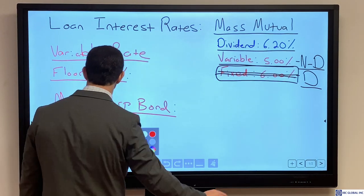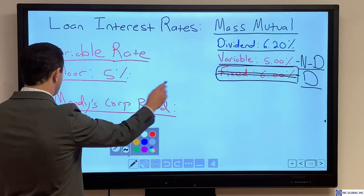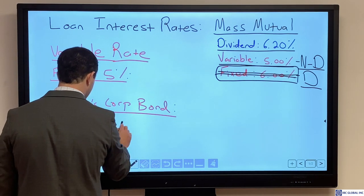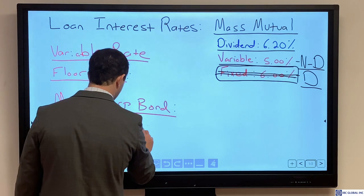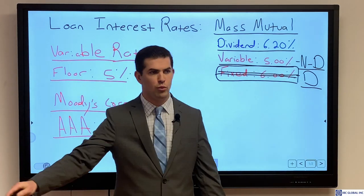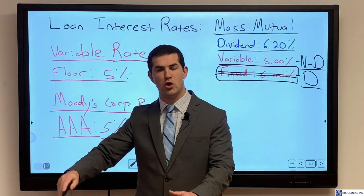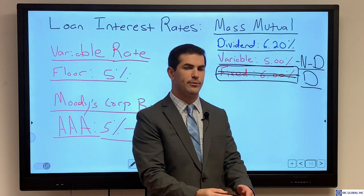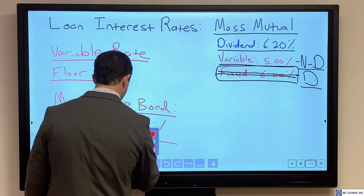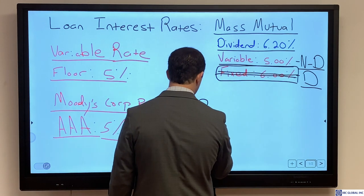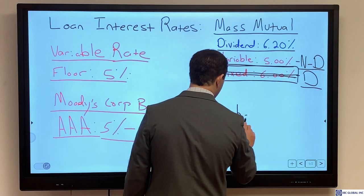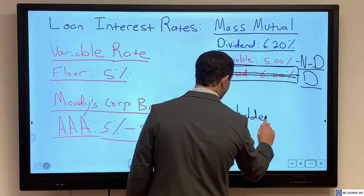Now, let's say the rate shoots up from 5% to 8%. MassMutual as a company, their variable loan rate will shoot up from 5% to 8%. But as a policyholder, I have protections.